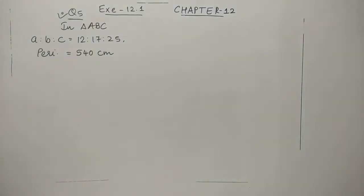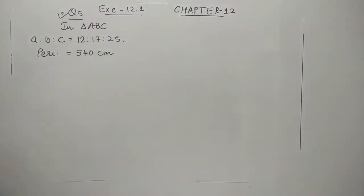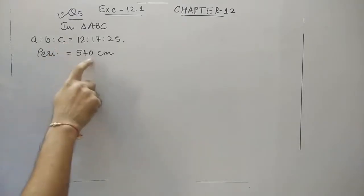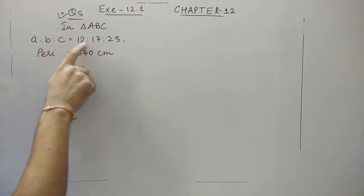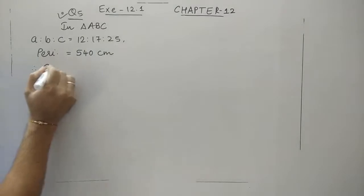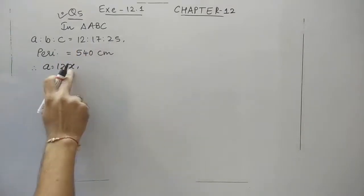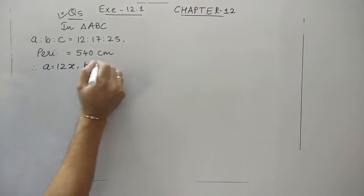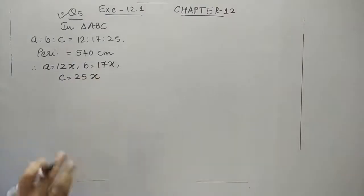Let us continue with question number 5. We can correlate this with the previous question. In the previous question, 2 sides and the perimeter were given. Here, the ratio of all 3 sides and the perimeter are given. The sides of triangle ABC are in the ratio 12:17:25. We suppose a constant x, so A = 12x, B = 17x, and C = 25x. Let us first find the value of x.